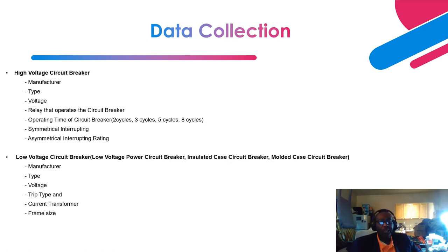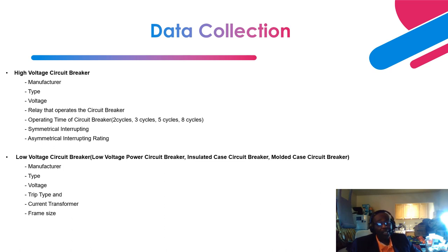For a high voltage circuit breaker, you need the manufacturer, type, voltage, the relay that operates that circuit breaker (since the relay output operates the trip or close coil), documentation on that relay, and the operating time — two, three, five, or eight cycles. Most often, high voltage circuit breakers are two-cycle breakers; medium voltage is three- to five-cycle. You also need the symmetrical and asymmetrical interrupting ratings — the asymmetrical rating is typically the peak short circuit rating of the circuit breaker.